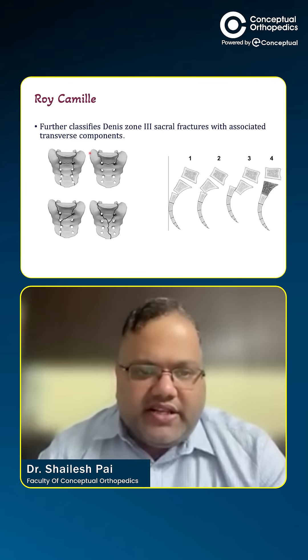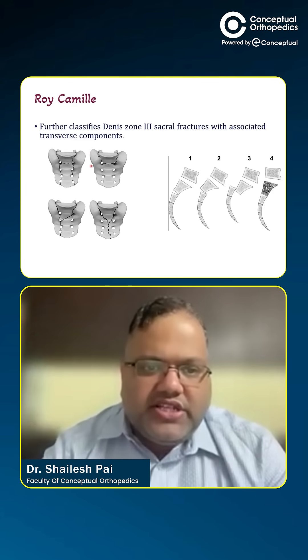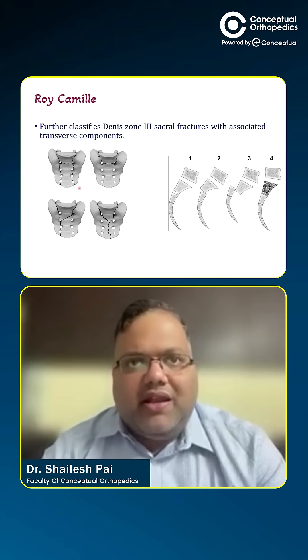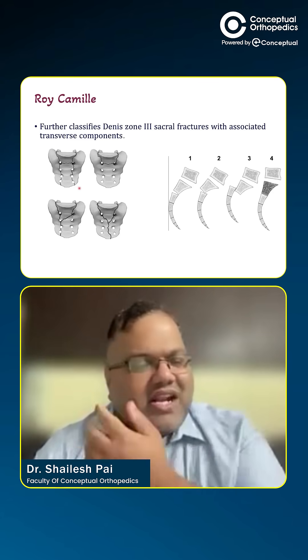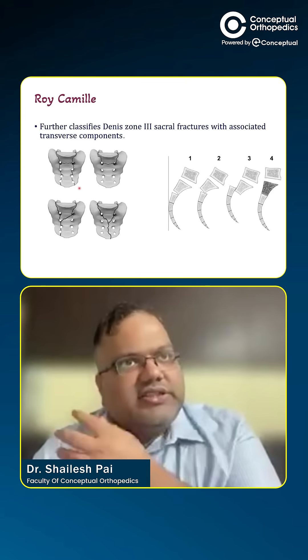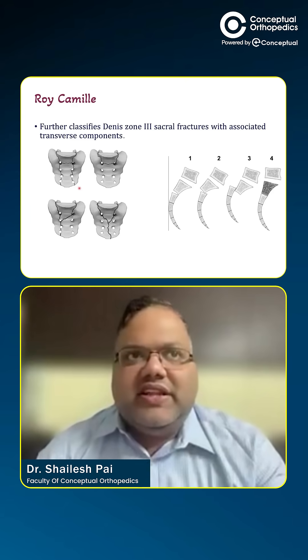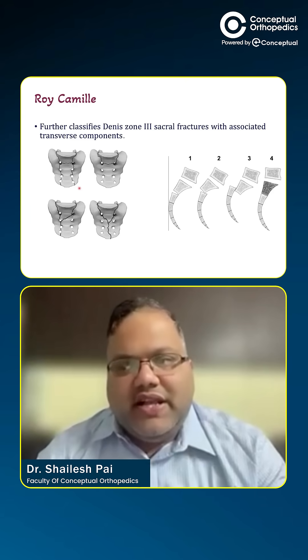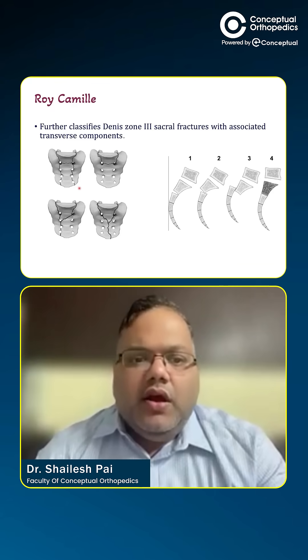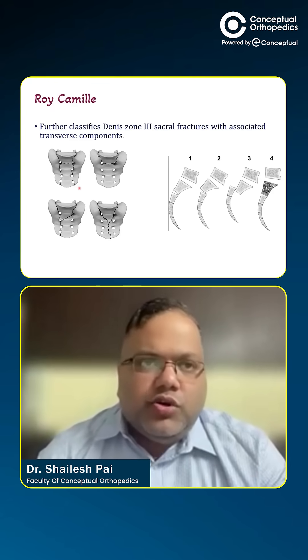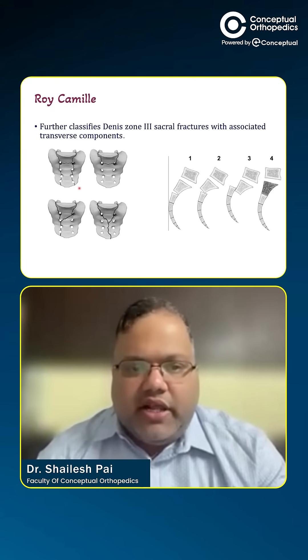So the pattern is described as U, H, Y, T, or lambda — you just describe the fracture. This tells us that there is a transverse element or an oblique element in addition to a vertical element.